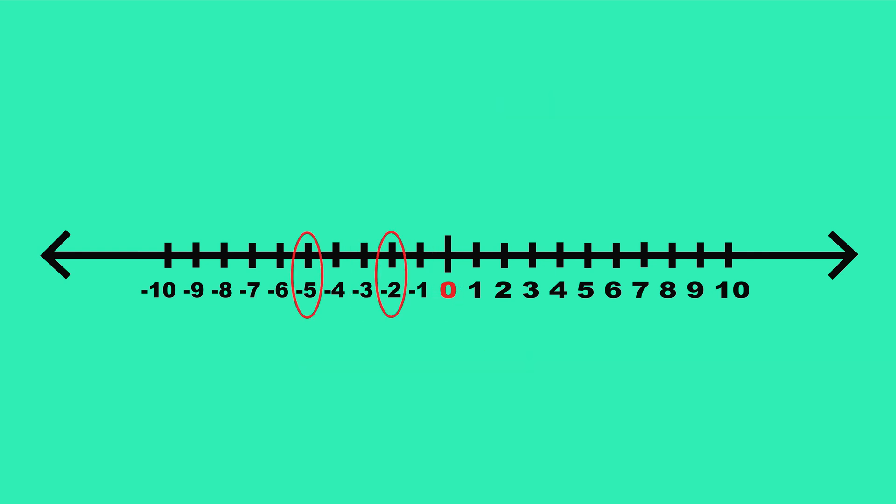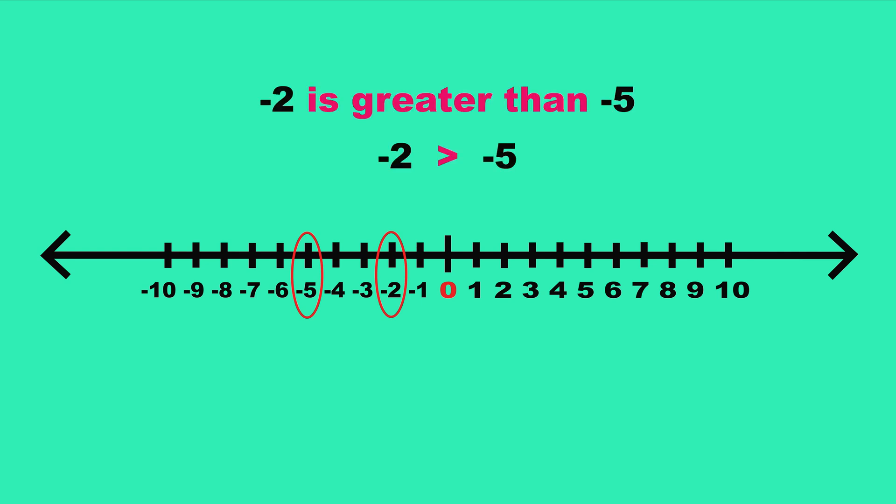What about negative 2 and negative 5? Well, negative 2 is further right, so it is greater. We say negative 2 is greater than negative 5, or negative 5 is less than negative 2.